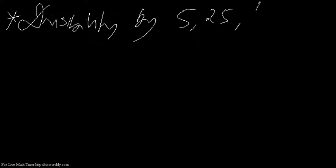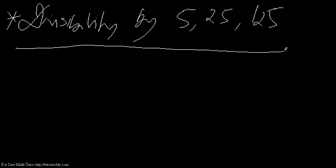Suppose we want to know whether any number is divisible by 5, 25, or 125 or not. How do we know that? So here we do divisibility by 5, 25, 125 — this kind of numbers. When can we say that a number is divisible by 5?